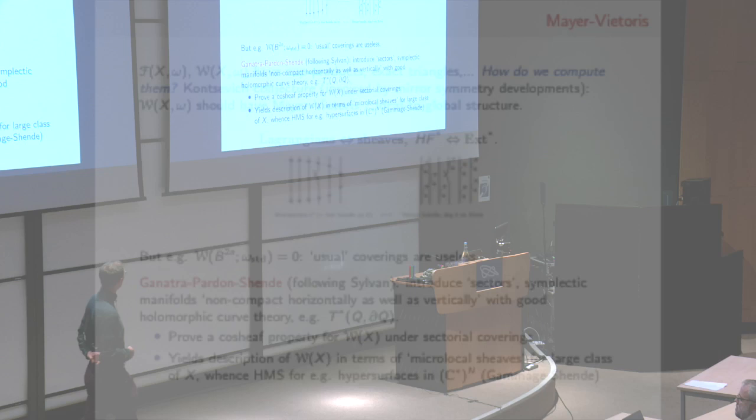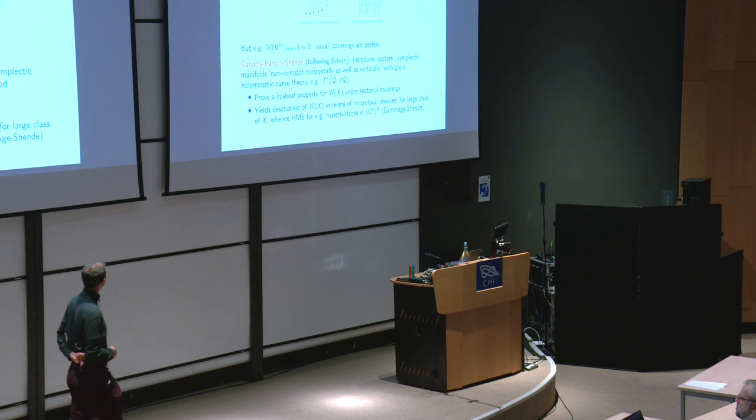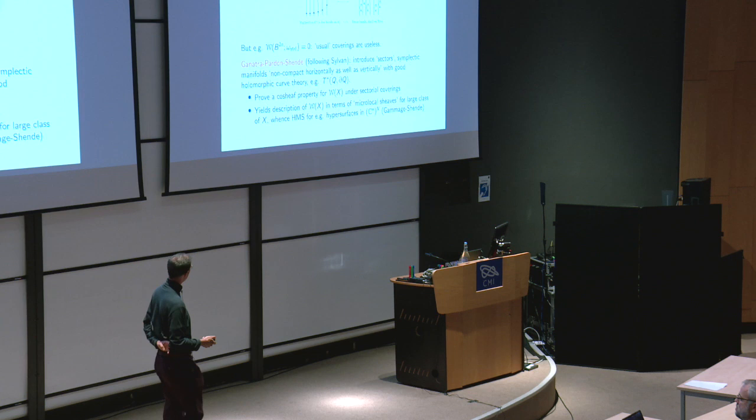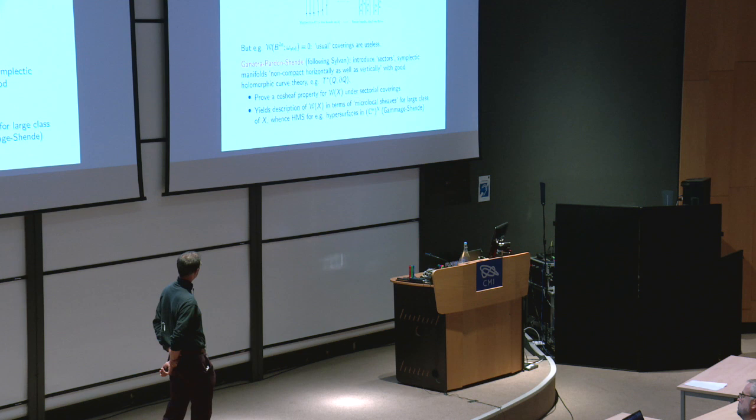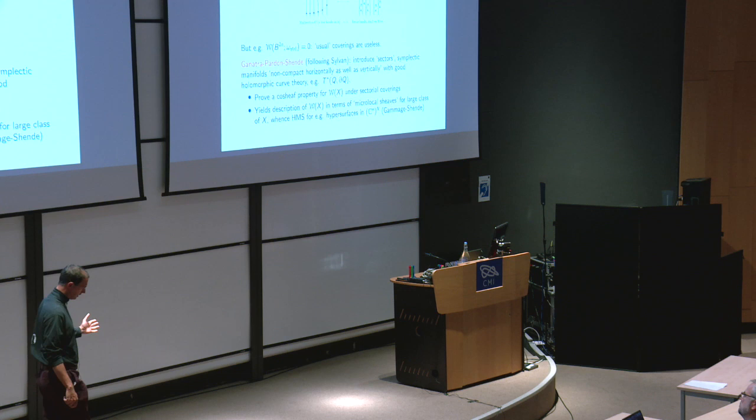In joint work with Sheel Ganatra and Vivek Shende, John introduced a new class of non-compact symplectic manifolds now called Weinstein or Liouville sectors, and they're somehow non-compact in two directions, horizontally as well as vertically. You should think of something like the cotangent bundle of a manifold with boundary in which you deal with compactness issues for holomorphic curves at one infinity via maximum principles but in a different horizontal infinity via a fundamentally different mechanism coming down to the open mapping theorem.